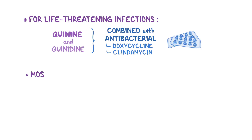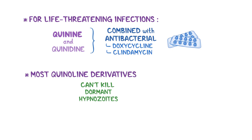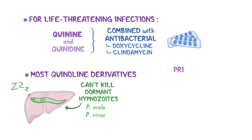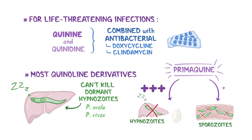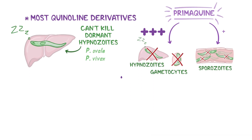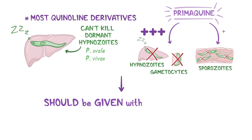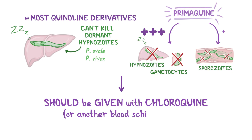One problem is that most quinoline derivatives can't kill the dormant hypnozoites of plasmodium ovale and plasmodium vivax in the liver. Primaquine is the exception, because it's less effective at killing sporozoites in the blood, but more effective at killing hypnozoites and gametocytes. For this reason, it should always be given along with chloroquine or another blood schizonticide when treating plasmodium ovale and plasmodium vivax infections.